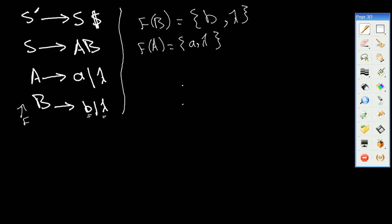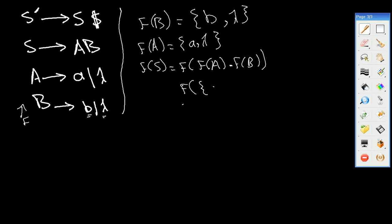Moving forward, we have to calculate FIRST(S). FIRST(S) is equal to FIRST(A) dot FIRST(B). FIRST(A), as we calculated previously, is {A, lambda}. So we have the set {A, lambda} dot the second set {B, lambda}.